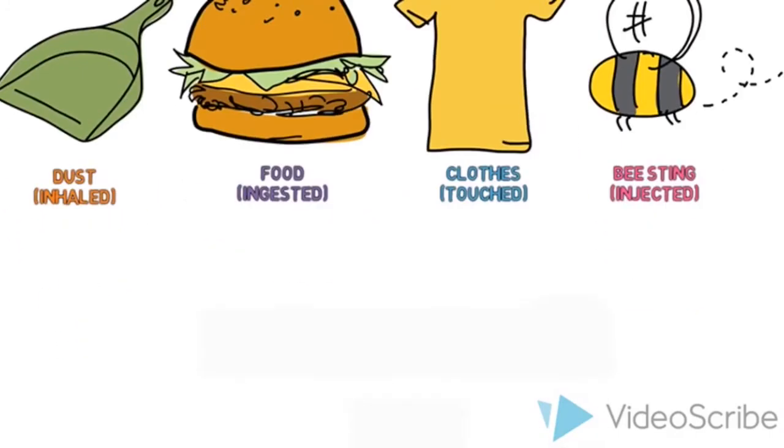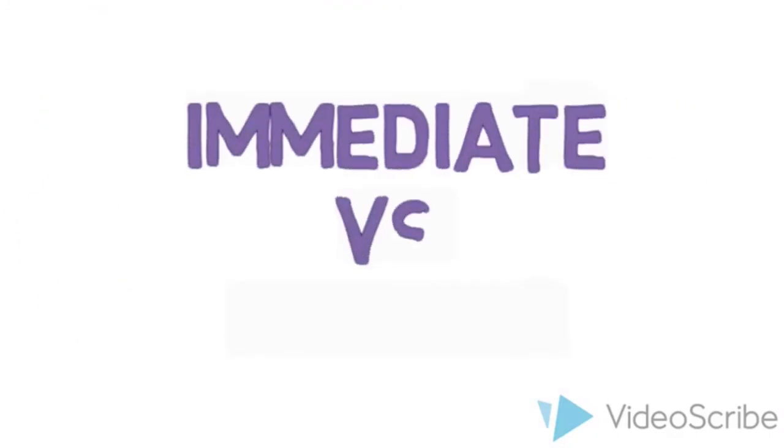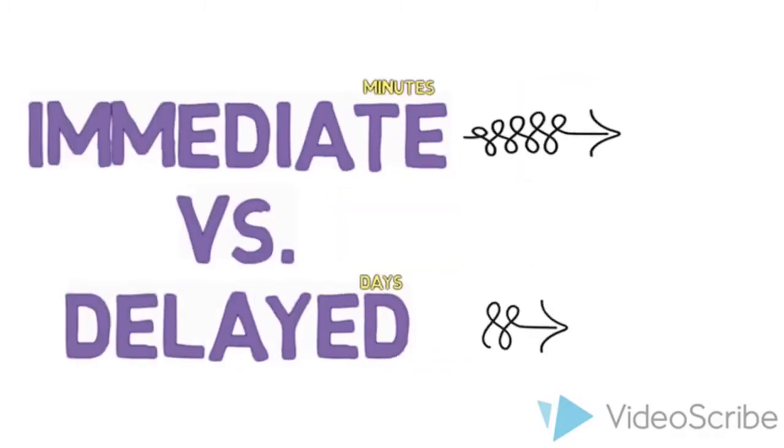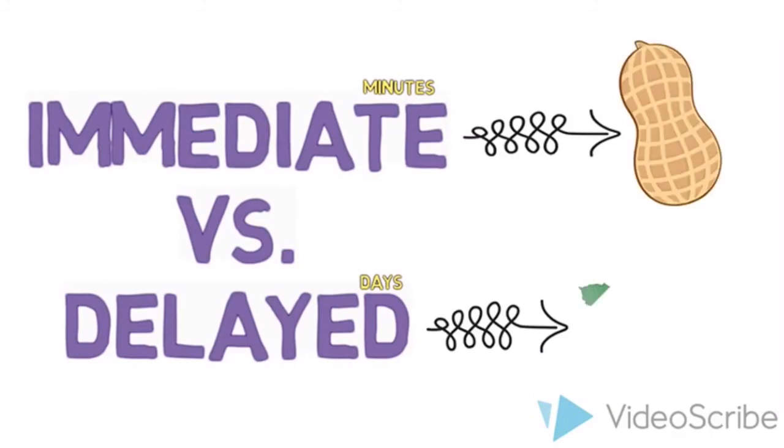Once an allergen is detected in the body, there are two different types of allergic reactions: immediate or delayed. An immediate reaction would happen within minutes after exposure to the body, while a delayed reaction can take anywhere from four hours to days after exposure to feel a reaction. An example of an immediate reaction would be eating peanuts, while an example of a delayed reaction would be when you come into contact with poison ivy.